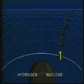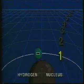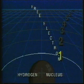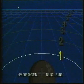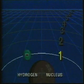In Bohr's concept, a free electron may eventually collide with an orbiting electron. Such a collision can transfer energy to the orbiting electron.